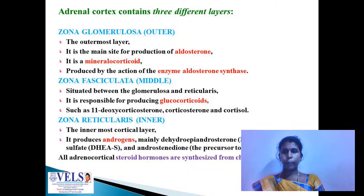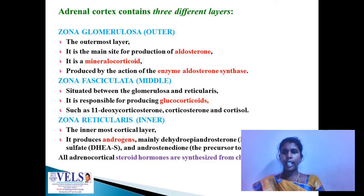The adrenal cortex contains three different layers: zona glomerulosa, zona fasciculata, and zona reticularis. Zona glomerulosa is the outermost layer, which releases mineralocorticoids. Zona fasciculata is the middle layer, which releases glucocorticoids. Zona reticularis is the innermost layer, which releases androgens.